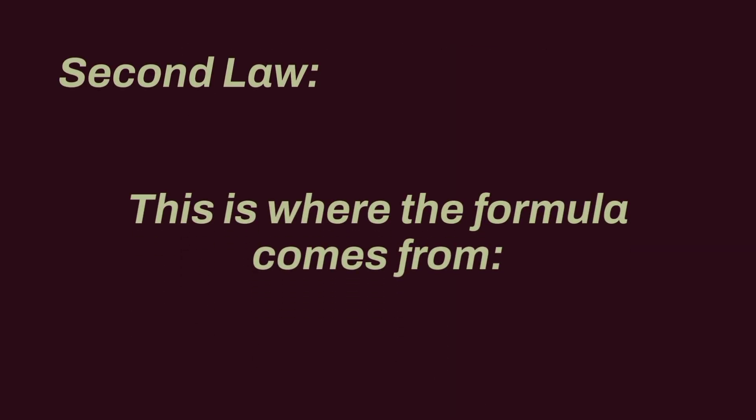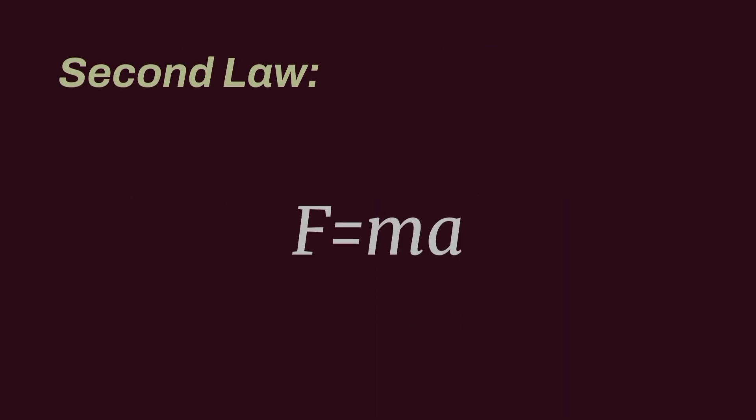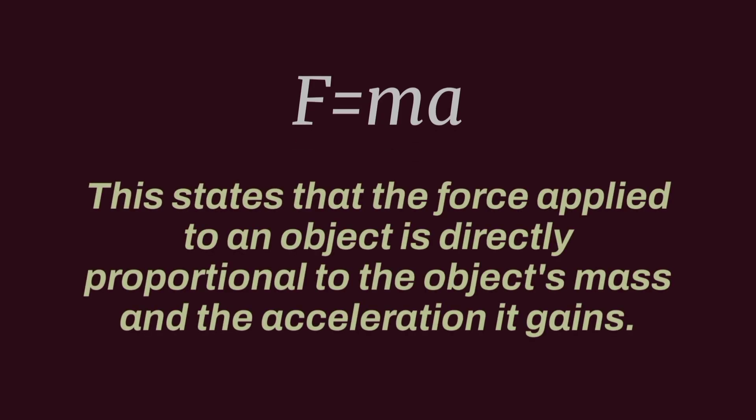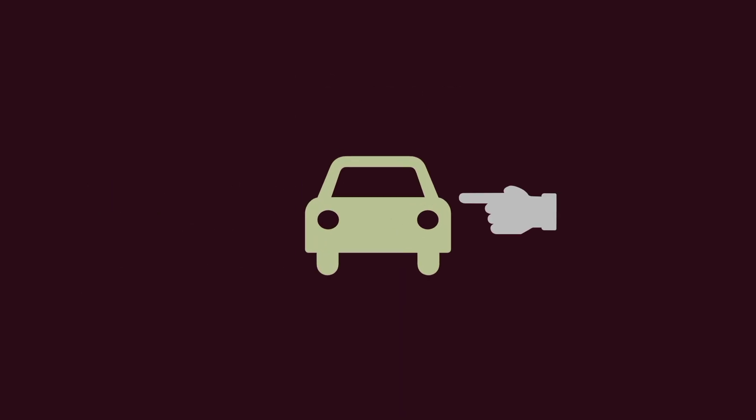Second law. This is where the formula comes from: F equals MA. This states that the force applied to an object is directly proportional to the object's mass and the acceleration it gains. In other words, when you push a car, the harder you push force, the faster the car accelerates. But the heavier the car's mass, the less it accelerates with the same force. It's that simple.